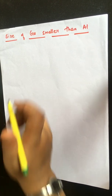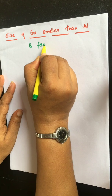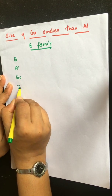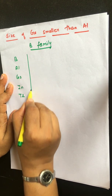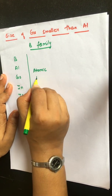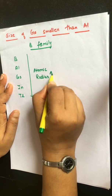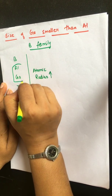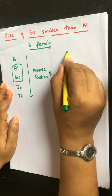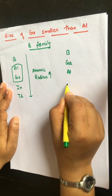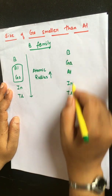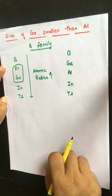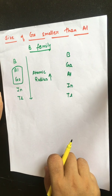If we talk about the boron family, the members are boron, aluminium, gallium, indium, and thallium. We know that when we move from top to bottom, atomic radius increases, but there is one exception between aluminium and gallium. The order is: boron, gallium, aluminium, indium, and thallium — meaning gallium's radius is smaller than aluminium's.